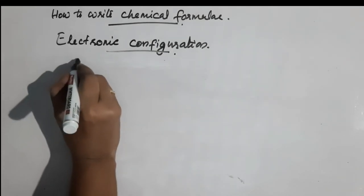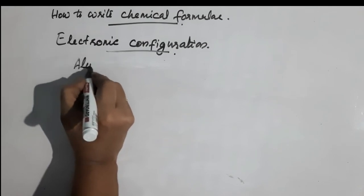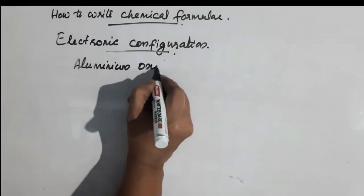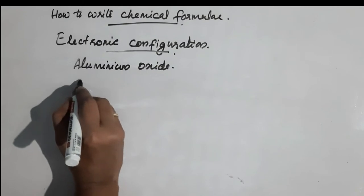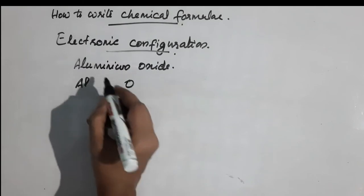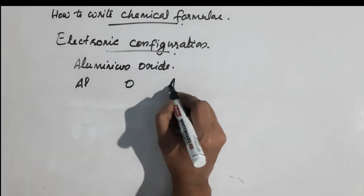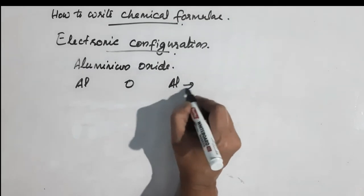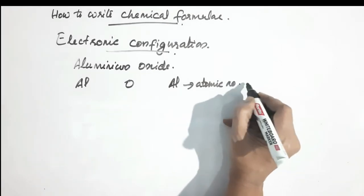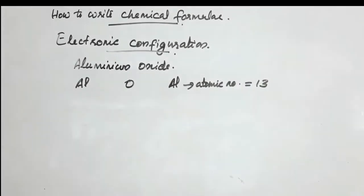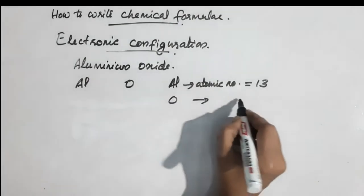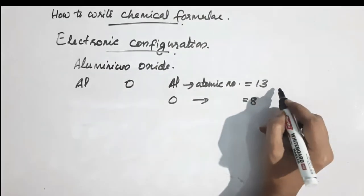The next example is aluminum oxide. The symbol of aluminum and oxygen — oxide refers to oxygen. The atomic number of aluminum is 13, and the atomic number of oxygen is 8.